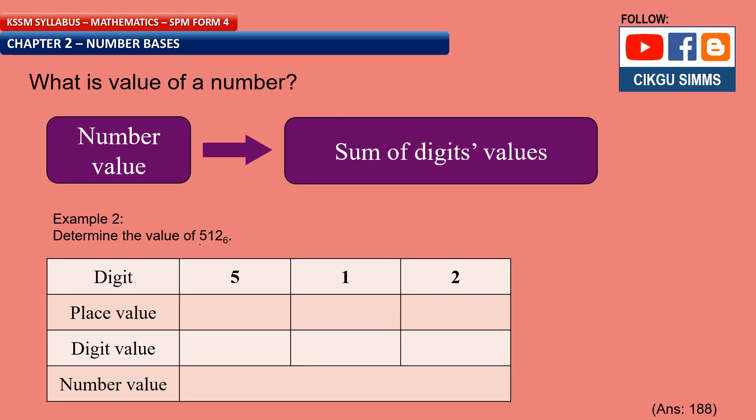Find the value of 5, 1, 2 base 6. So first we find the place value first. Base 6, right? So 6 to the power of 0, 6 to the power of 1, 6 to the power of 2. And then you can find the value. 1, 6, 6 times 6 is 36.